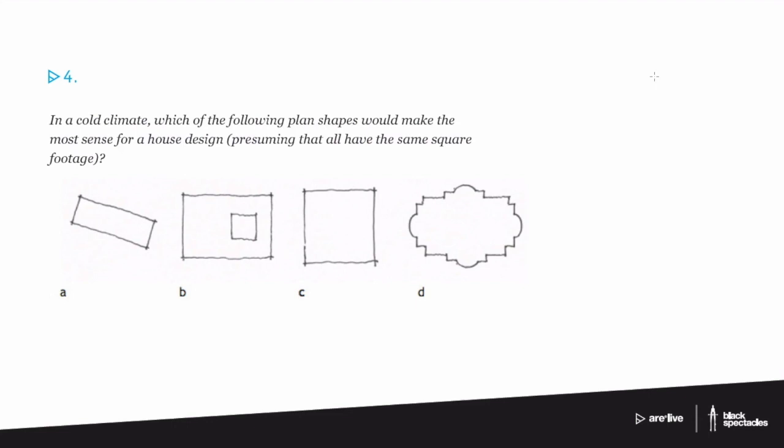So one possibility is a long thin house that's on a specific angle. Another possibility is a more squarish house with a courtyard. Another is an actual square structure in plan. And the last one is my version of the Villa Rotunda.